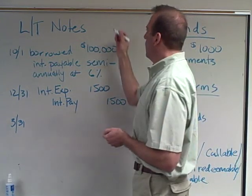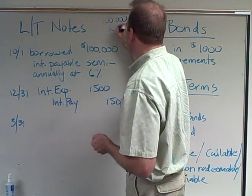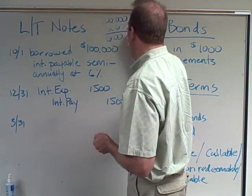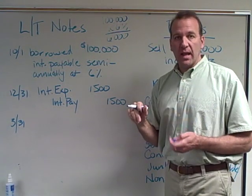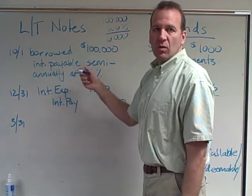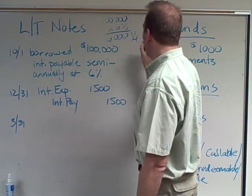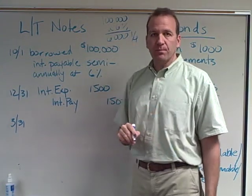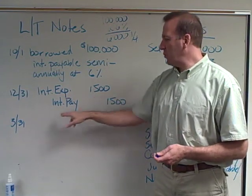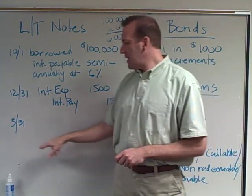The adjusting entry is: debit Interest Expense $1,500 and credit Interest Payable $1,500. How did we get that? We took $100,000 times 6%, which gives us $6,000 — that's the annual interest. But this is only for three months, one quarter of the year, so we divide by four, giving us $1,500. We debit the expense and credit the payable.